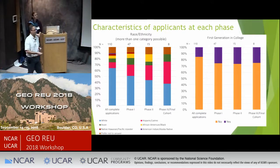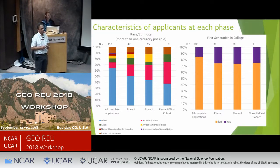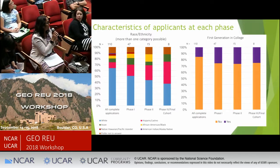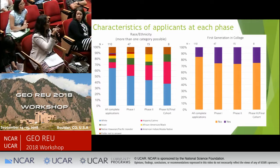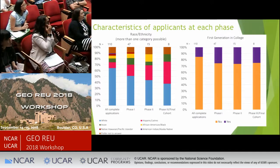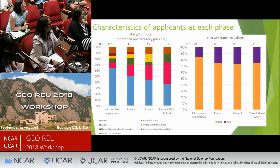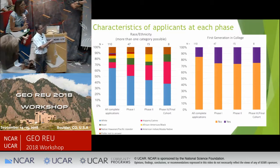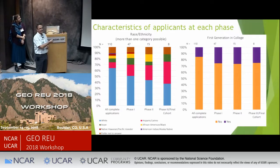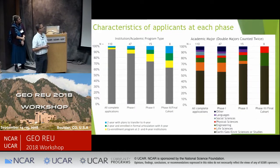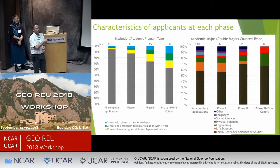Audience question: Are the 110 applicants all national? Yes, U.S. citizens and permanent residents — the map showing international locations just reflected where they happened to be that day. For first-generation college student status, we're tracking how that moves through the process. For institution and academic program type, we started with a very heavy applicant pool weighted toward four-year institutions, but we had a strong emphasis on bringing in students from two-year institutions and increasing that through the selection process.